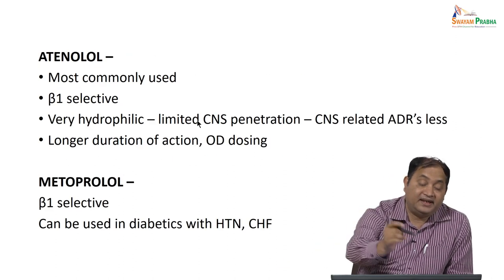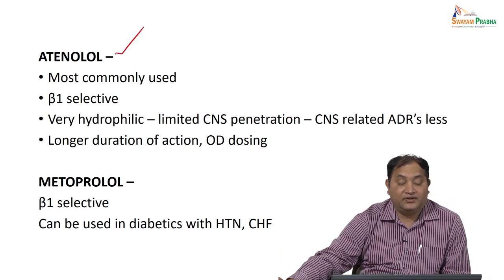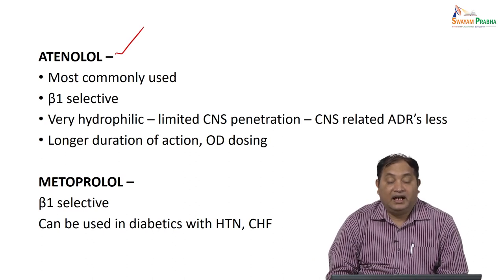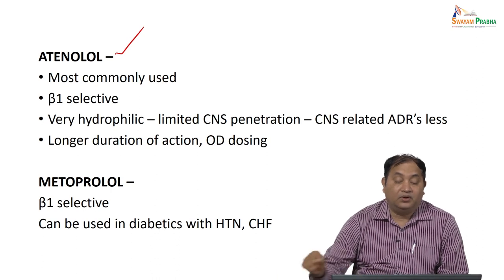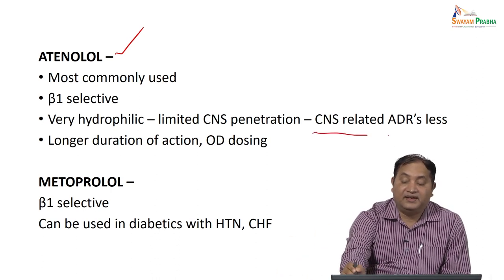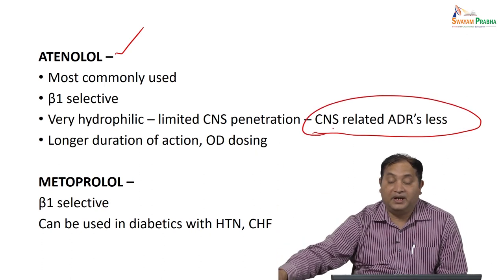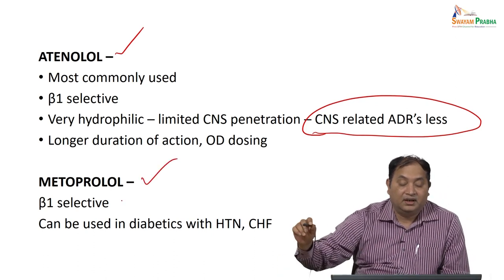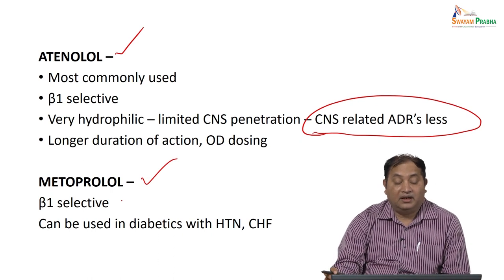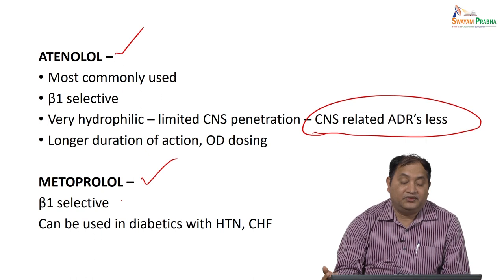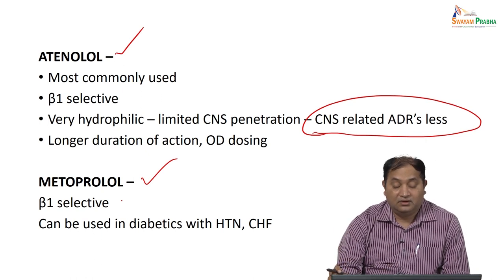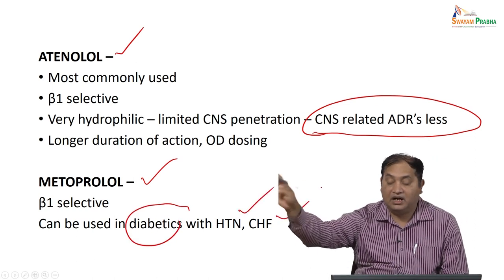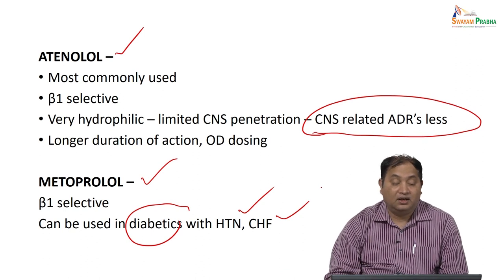The most commonly used beta blocker is atenolol — it is beta-1 selective, very hydrophilic with poor lipid solubility, so there is limited CNS penetration and fewer CNS side effects compared to other beta blockers. The second commonly used is metoprolol — also beta-1 selective, and it can be used in diabetes as well as hypertension or congestive heart failure. These are the advantages of atenolol and metoprolol.